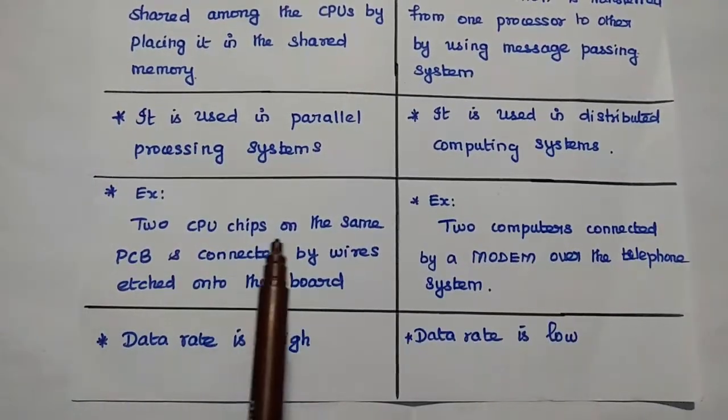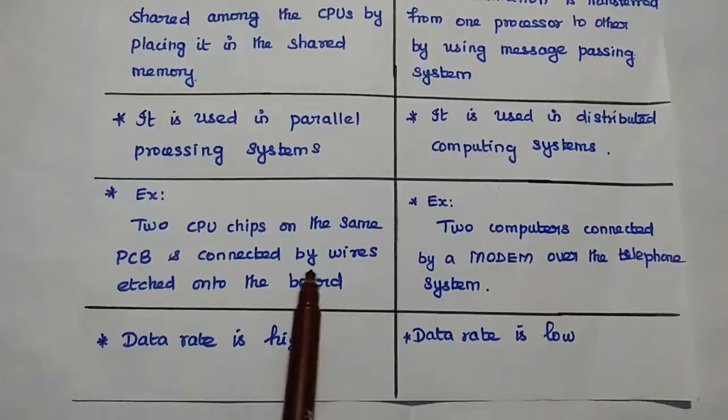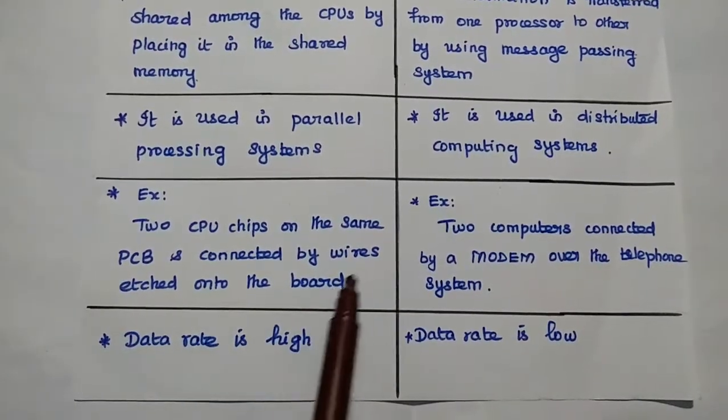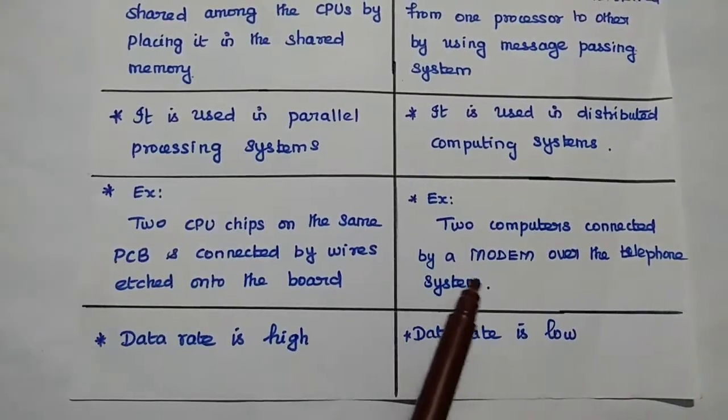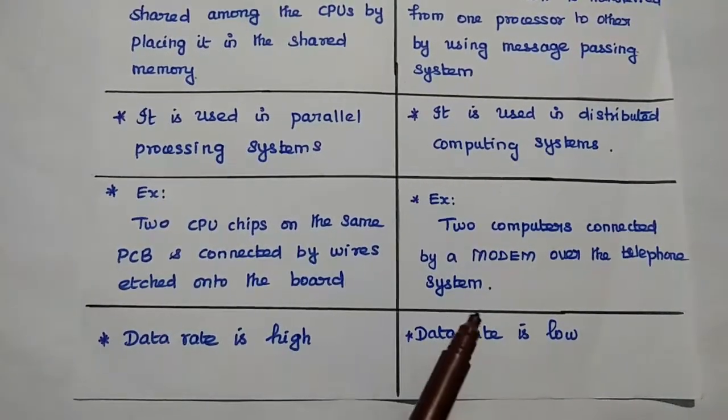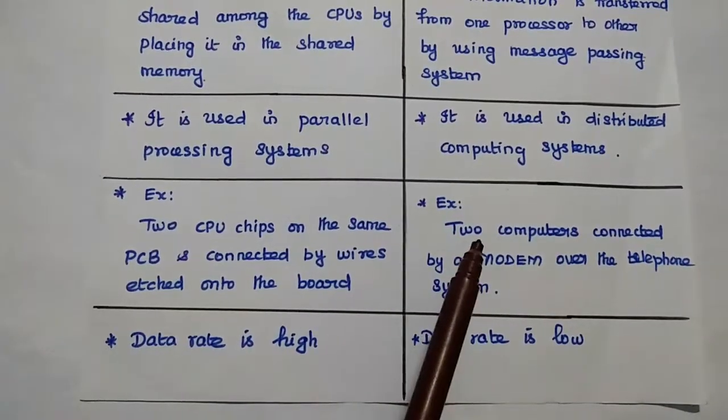Example, two CPU chips on the same printed circuit board and connected by wires etched onto the board. Here the example is two computers connected by a modem over the telephone system. So here each computer is having its own memory.